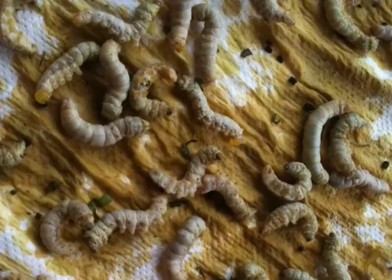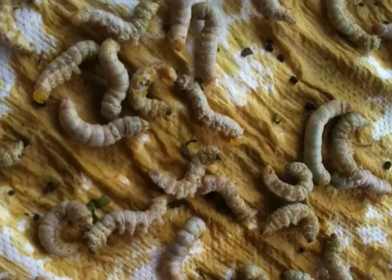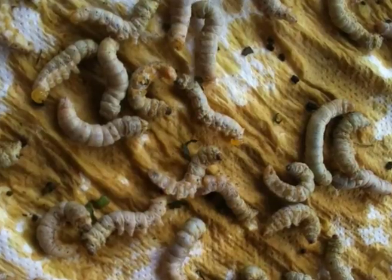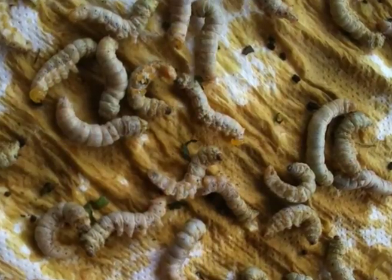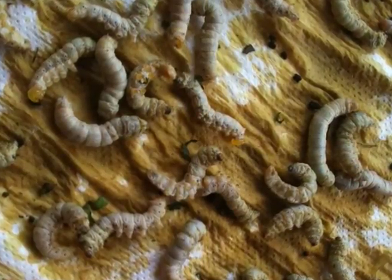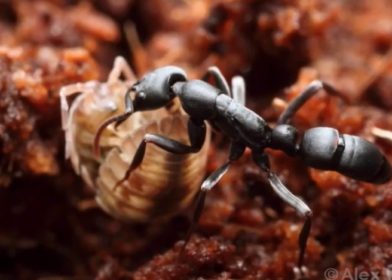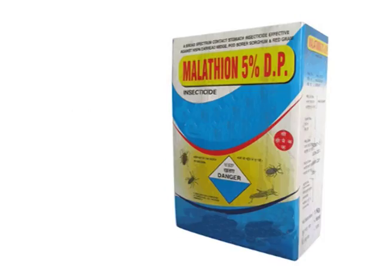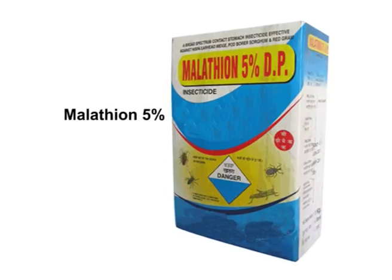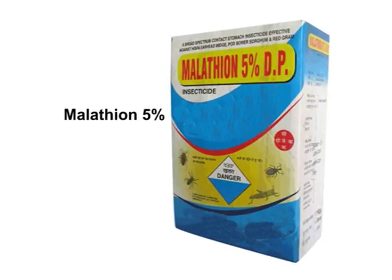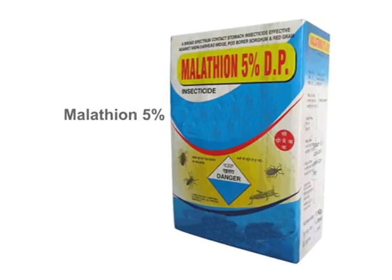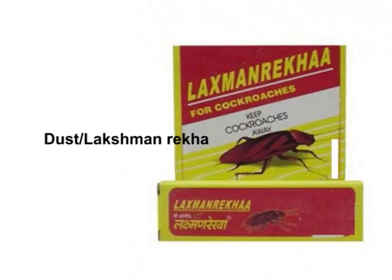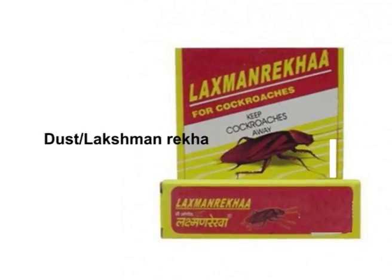Remove dead worms and non-spinners on second day of spinning. To protect the silkworm from predatory ants, apply malathion 5 percent dust or ant chalk piece at the base of the mountage stand.